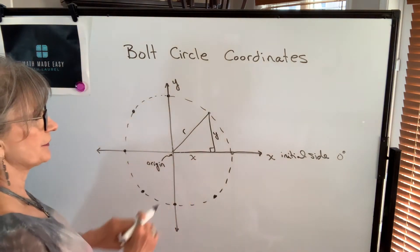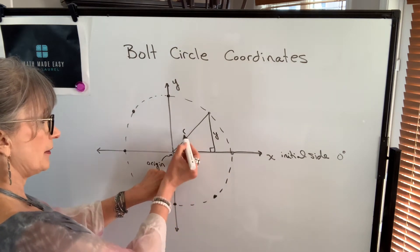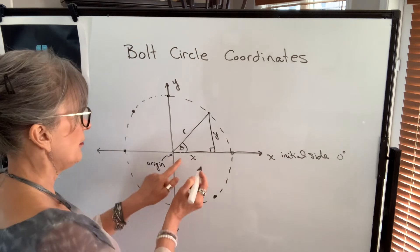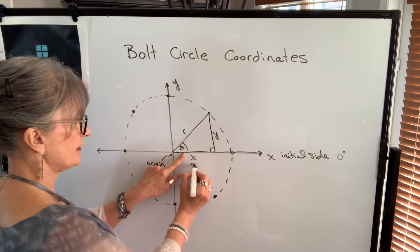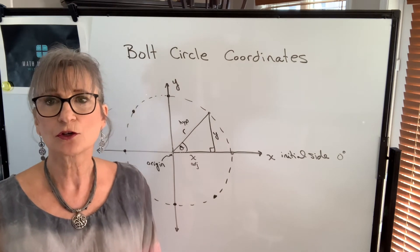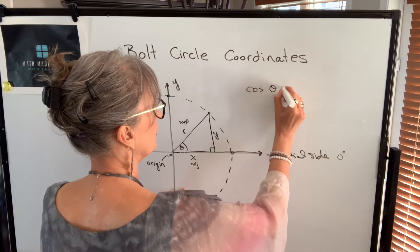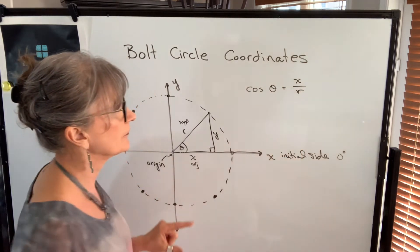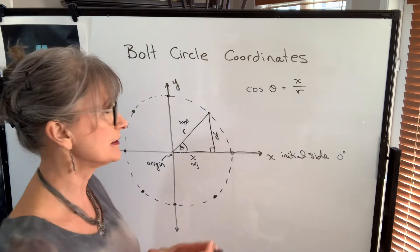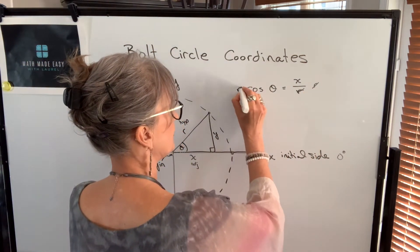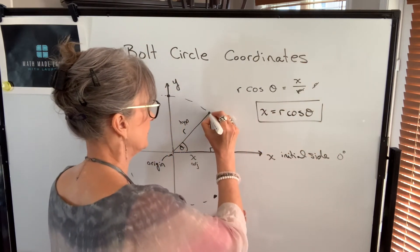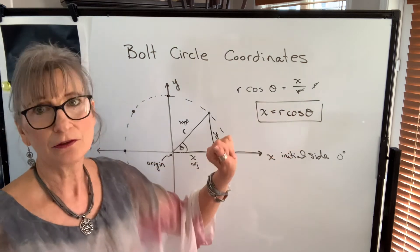To find the x-coordinate, I'll use the known radius and the angle. Since the x side is adjacent to the angle and the radius is the hypotenuse, the trig function that uses the adjacent side and the hypotenuse is the cosine function. So the cosine of our angle equals x divided by the radius. To isolate x, I multiply both sides by the radius, giving us the formula: x equals radius times the cosine of our angle. I'll need to know the angle and the radius to find each x-coordinate.